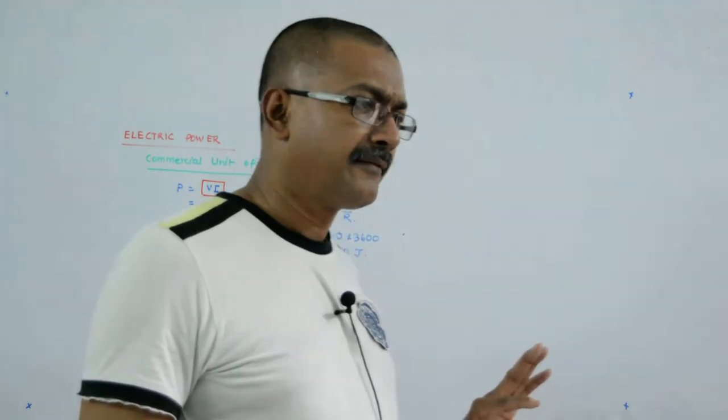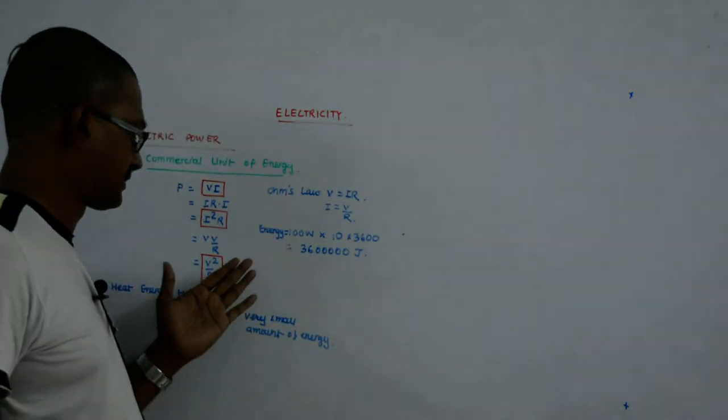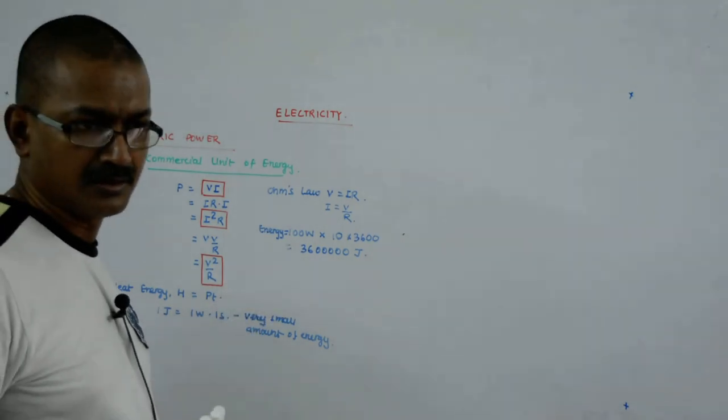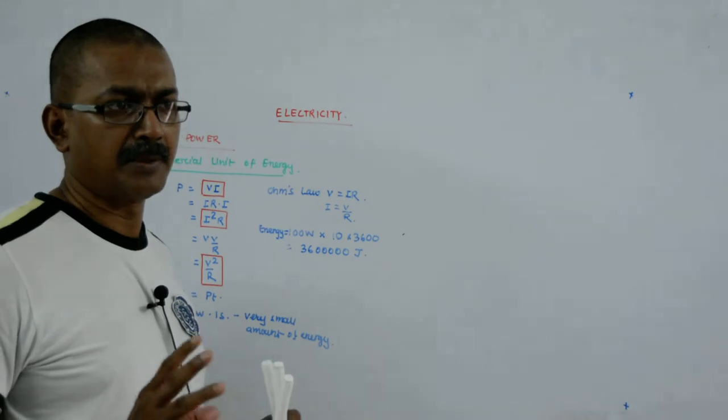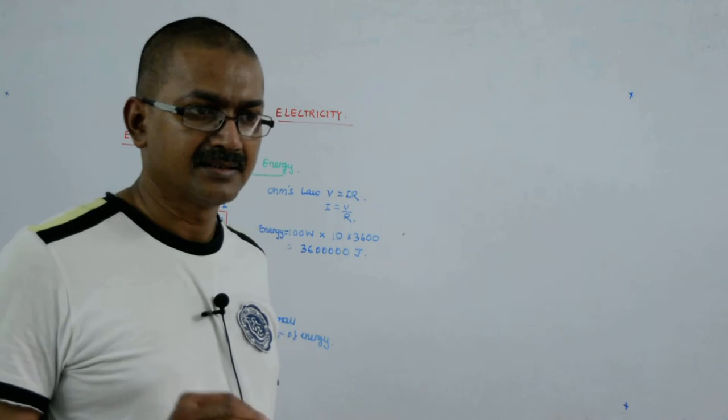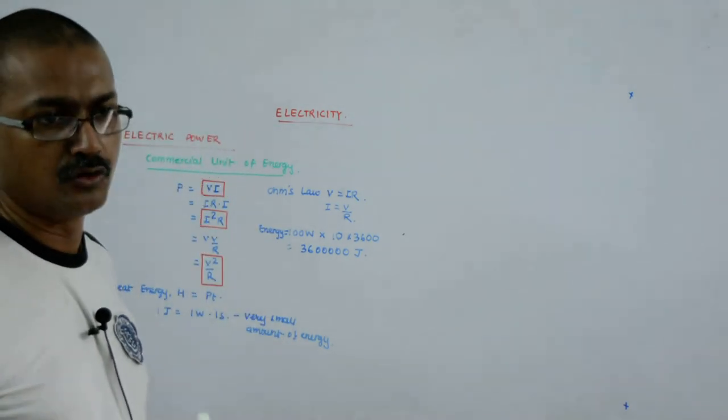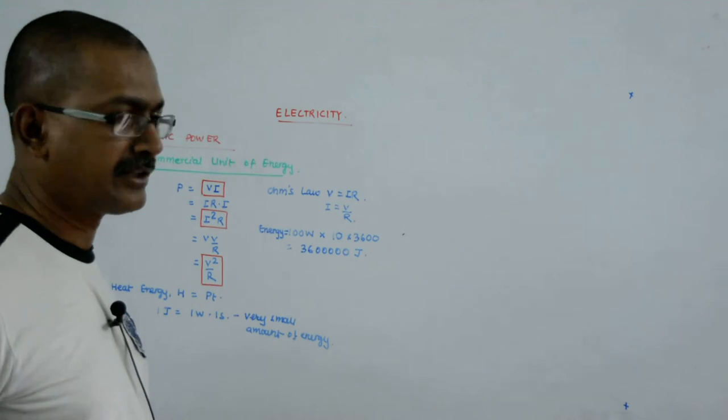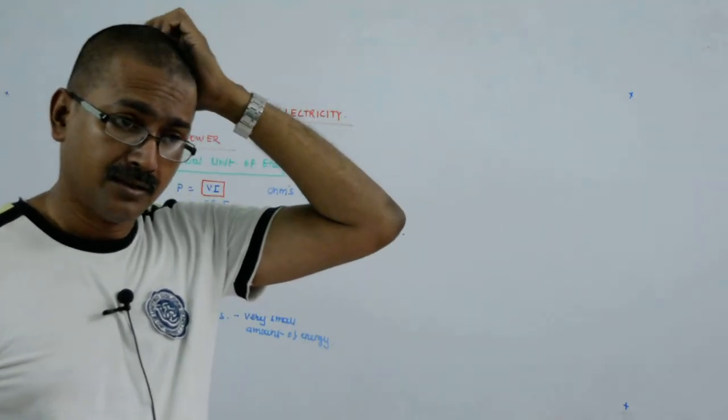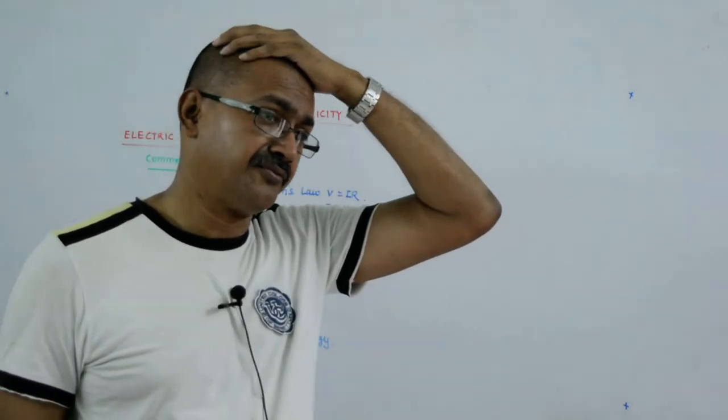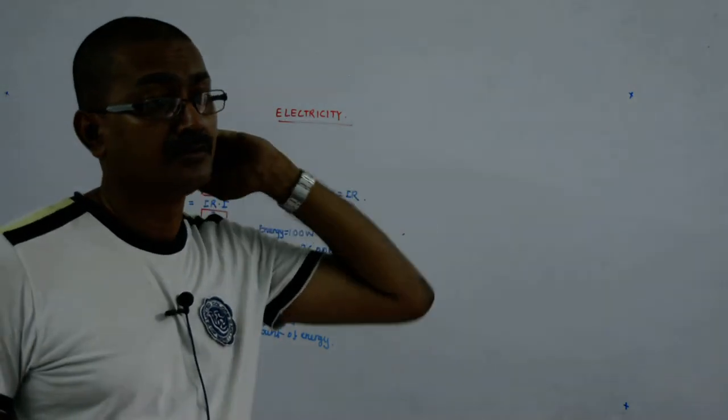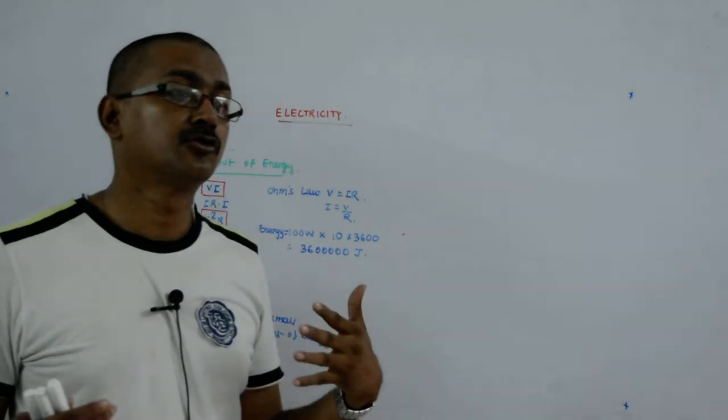So what we do? We say we will not be using joule as the unit of energy. We will not be multiplying watt by second to give us joule. Because maybe typically you get the bill and the electricity board tells you you have been using 10 crore 50 lakh 70,887 joules of energy.